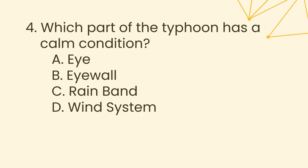Question 4. Which part of the typhoon has a calm condition? A. Eye, B. Eye wall, C. Rain band, D. Wind system.